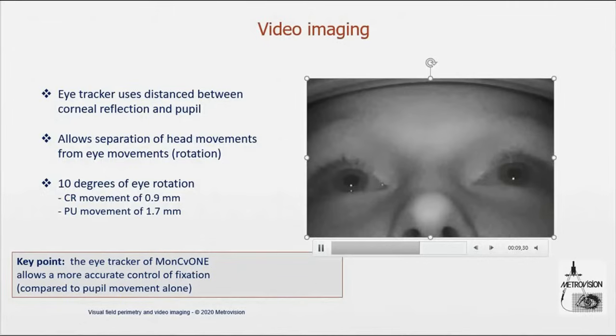Whereas with this eye tracker, what makes the difference between the corneal reflex and the pupil, we are able to detect movement less than 1 degree. And that is a very important feature to monitor the stability of fixation.